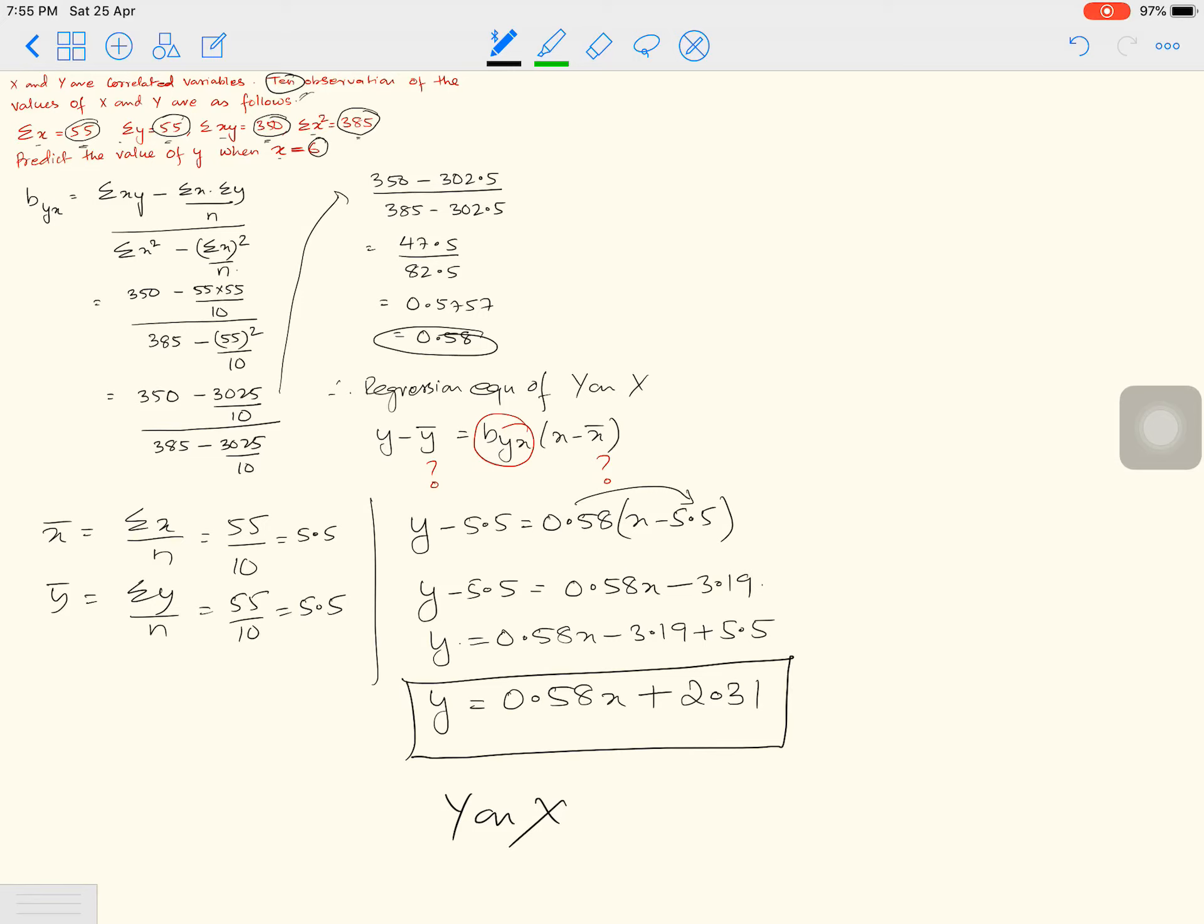So how do you predict? We have Y equals 0.58X plus 2.31. To predict the values of Y when X is given, I will use this equation. When X equals 6, it was 6 earlier.